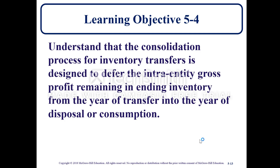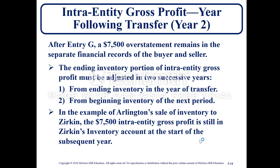Learning Objective 5-4: Understand the consolidation process for inventory transfers, designed to defer the intra-entity gross profit remaining in any inventory from the year of transfer into the year of disposal or consumption. In the year following a transfer, after entry G, the $7,500 overstatement remains in the separate financial records of the buyer and seller. The ending inventory portion of the intra-entity gross profit must be adjusted in two successive years: first, from the ending inventory in the year of transfer, and second, from the beginning inventory of the next period.